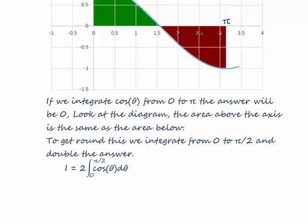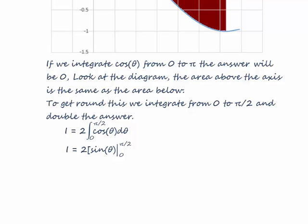We do the integral from zero to pi over two. The integral of cosine is sine, evaluated from zero to pi over two. Sine of pi over two is one, and sine of zero is zero, so our answer is going to be two, not zero.